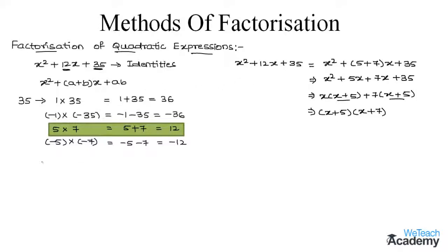From this method we can conclude that an expression in the form x² + (a + b)x + ab can be factorized as (x + a)(x + b).